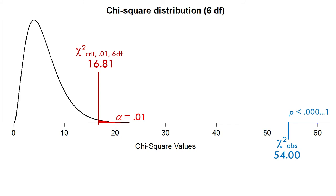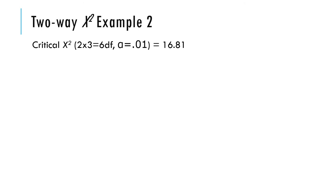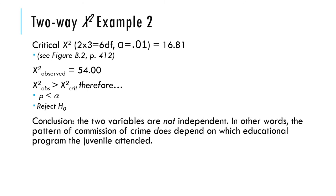Yes, we reject the null hypothesis. P is less than 0.00, lots of zeros and a one. Our chi-square observed is greater than our chi-square critical, we reject the null hypothesis because p is less than alpha. The conclusion is the two variables are not independent. The pattern of commission of crime after being in the programs does depend on which program you attended.